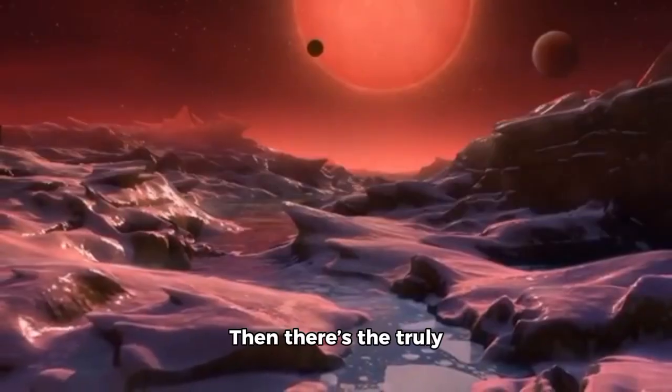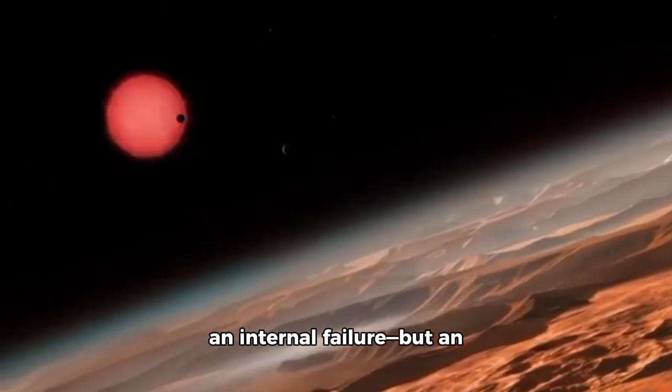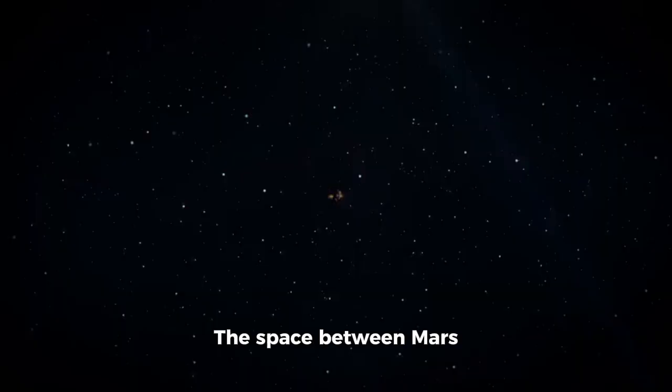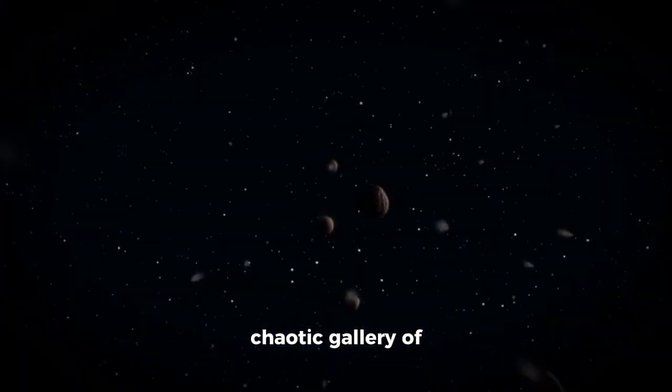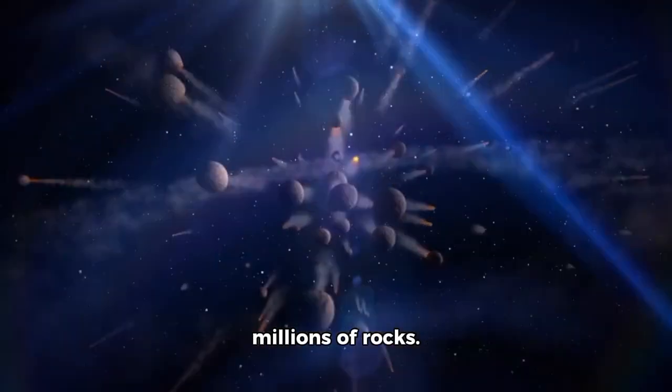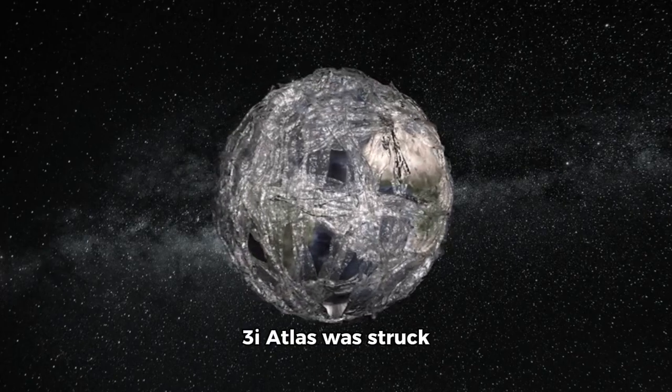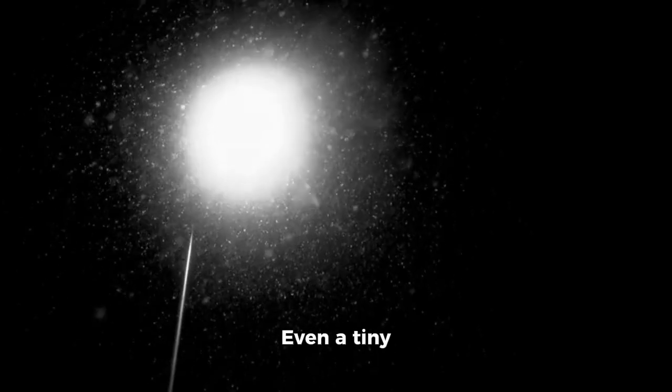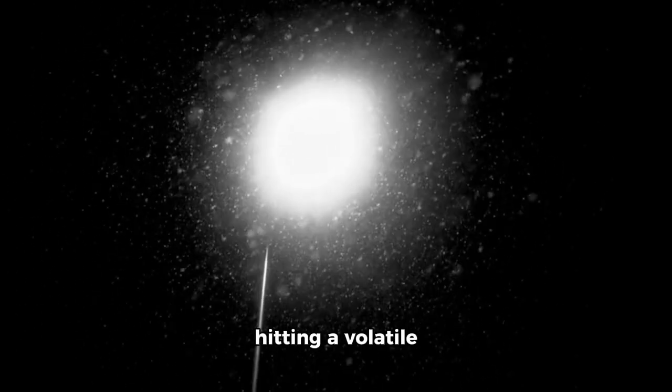The wild card theory. Then there's the truly wild card idea: it wasn't an internal failure, but an external event. What if 3I Atlas didn't act alone? The space between Mars and Jupiter is home to the asteroid belt, a chaotic gallery of millions of rocks. While space is vast, collisions do happen. Is it possible that 3I Atlas was struck by an invisible, smaller object? Even a tiny impact, say from a 10-foot-wide asteroid hitting a volatile comet at a combined speed of over 100,000 mph...